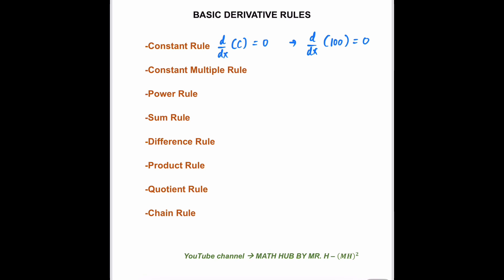The second rule we have is what we call the constant multiple rule. For example, we need to find the derivative. C stands for the constant. For this rule to be applied, we can separate the constant first before finding the derivative.